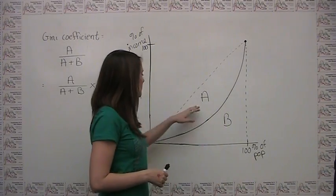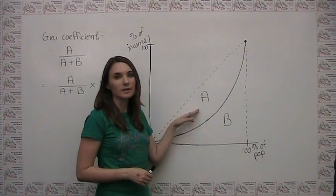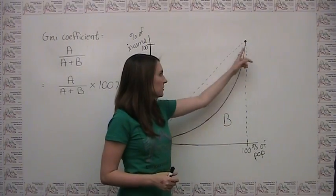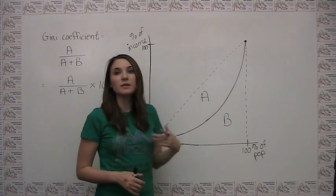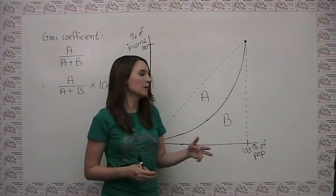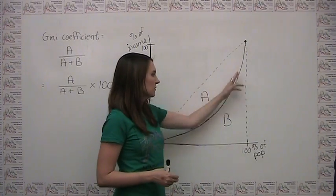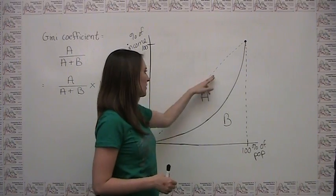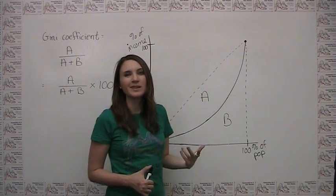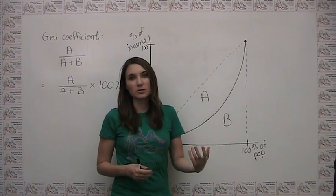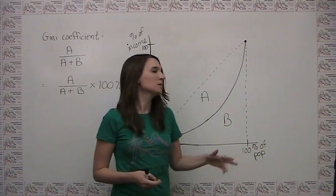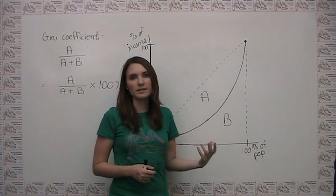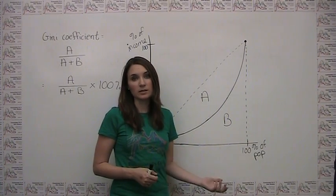In order to mathematically calculate areas A and B, it's usually necessary to come up with an equation for the Lorenz curve, and then use calculus to calculate either the area underneath the Lorenz curve or between the Lorenz curve and the 45-degree diagonal. For most practical purposes, these areas will most likely be given to you, or there will be cases where they're reasonably easy to calculate without using calculus.